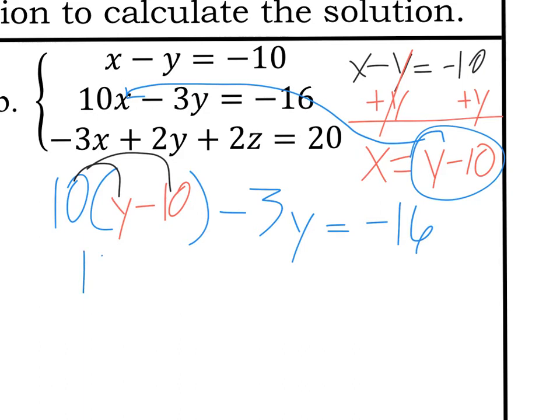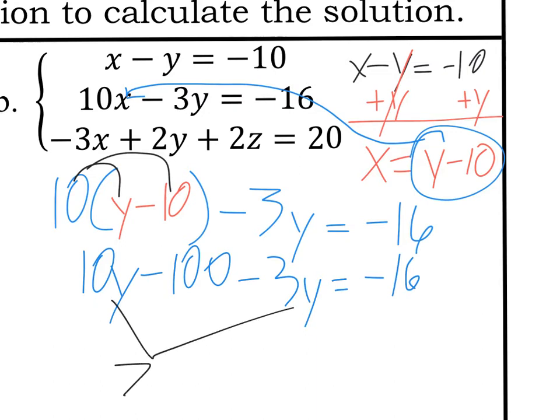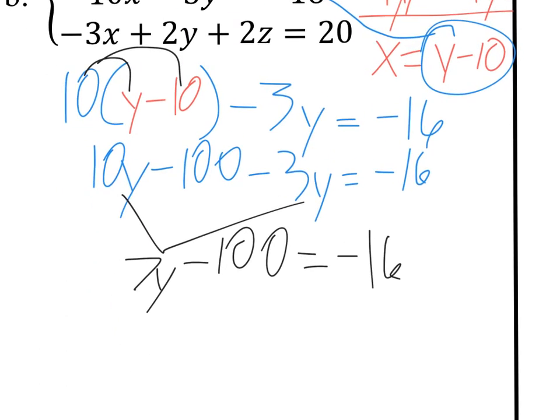Okay, so 10 times y is 10y. 10 times negative 10 is negative 100. Bring down the minus 3y equals negative 16. And now combine your like terms, meaning combine your two y terms. 10y minus 3y is 7y. Bring down the minus 100 equals negative 16. So again, I try and point this out as often as I can. I can't combine these and say it's negative 93. This has a y, that doesn't. So it stays separate like that.